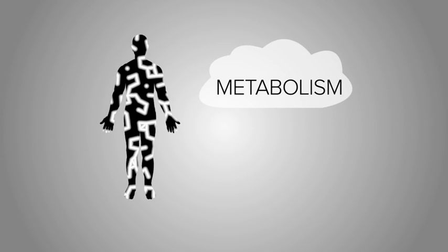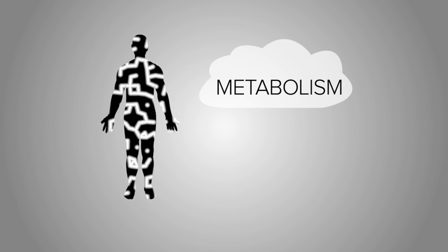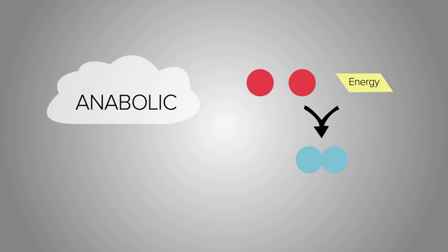To recap, all chemical reactions that take place in the human body are known as metabolism. When larger molecules are broken down into smaller molecules for the use of energy, it's called a catabolic reaction. And when small molecules are combined into larger molecules for energy storage, it's called an anabolic reaction.